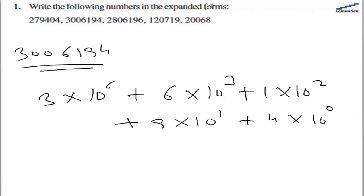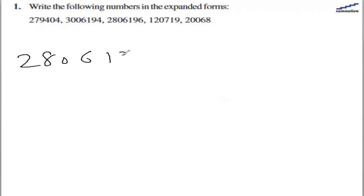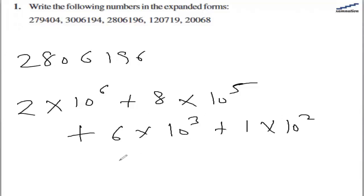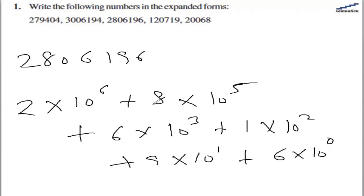In the third part we have 28061976. So just count the numbers — 1, 2, 3, 4, 5, 6. After 2 we have 6 numbers, so 2 multiplied by 10 raised to power 6. Then 8 multiplied by 10 raised to power 5. Then 6 multiplied by 10 raised to power 3 — nothing for the 0, as 0 is anyway 0. Then 1 multiplied by 10 raised to power 2, 9 multiplied by 10 raised to power 1, and finally 6 times 10 raised to power 0. So this will be the expanded format for this number.